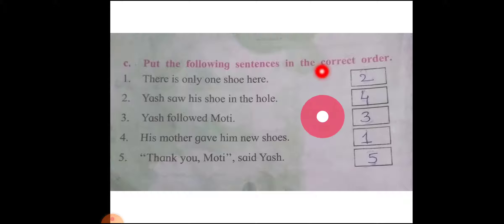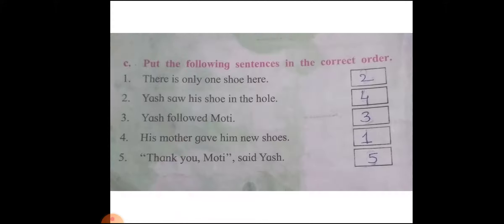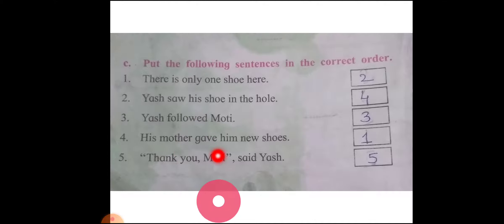Put the following sentences in the correct order. There are five sentences and we have to put them in proper order. The first one is: His mother gave him new shoes. Second: There is only one shoe here. Third: Yesh followed Moti. Fourth: Yesh saw his shoe in the hole. Fifth: Thank you, Moti, said Yesh.